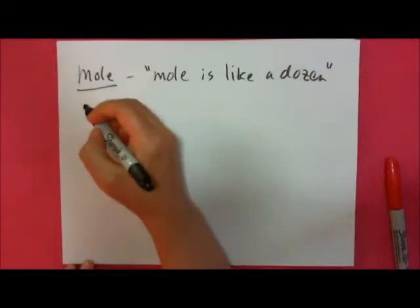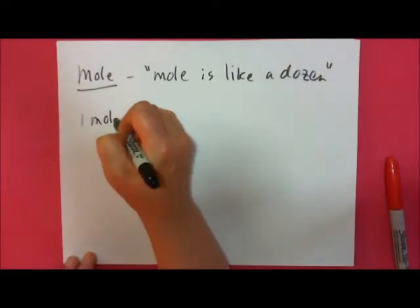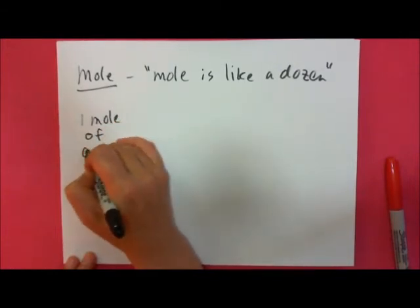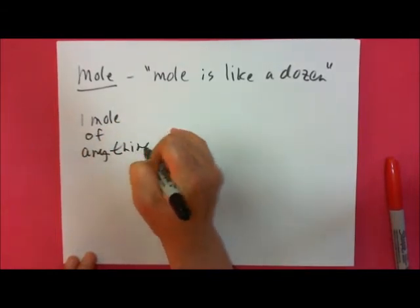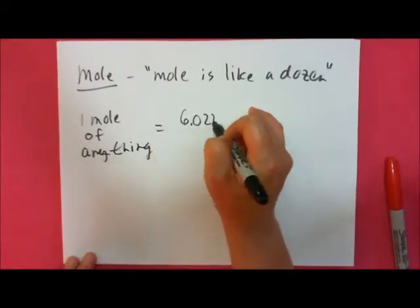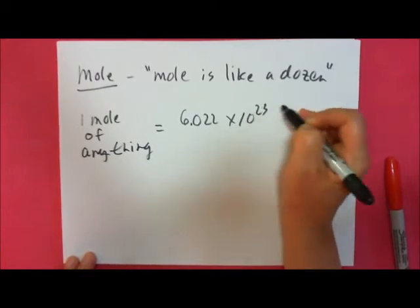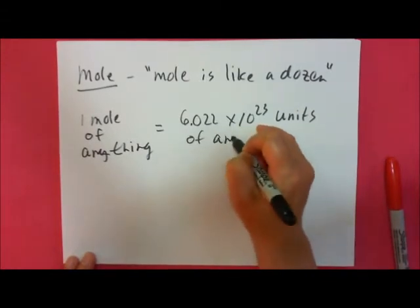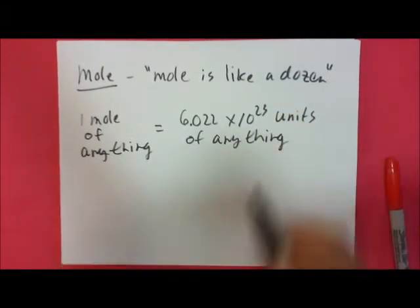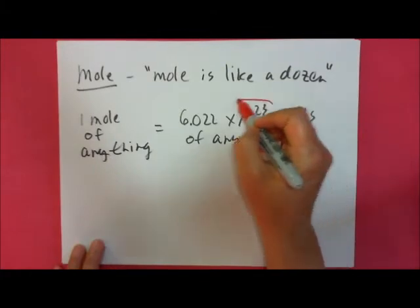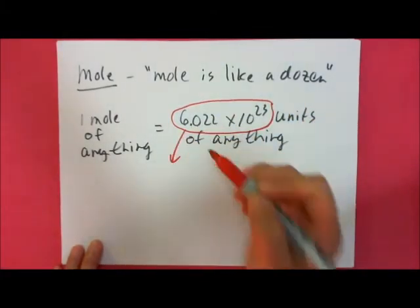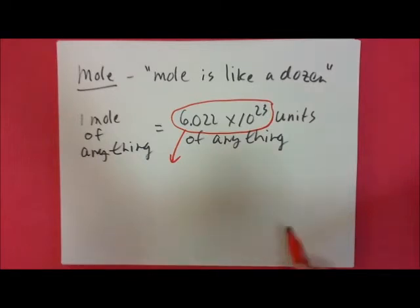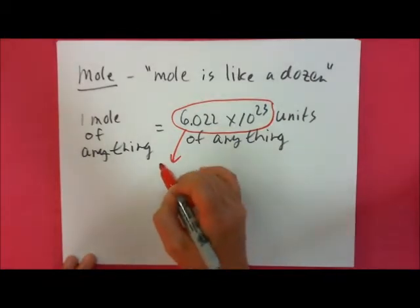One mole of anything is equal to 6.022 times 10 to the 23rd units of anything. That number, 6.022 times 10 to the 23rd, is one of those numbers you'll probably have to memorize — I'll likely put it on top of your exam — but it's a number that many chemists do memorize. This is known as Avogadro's number.